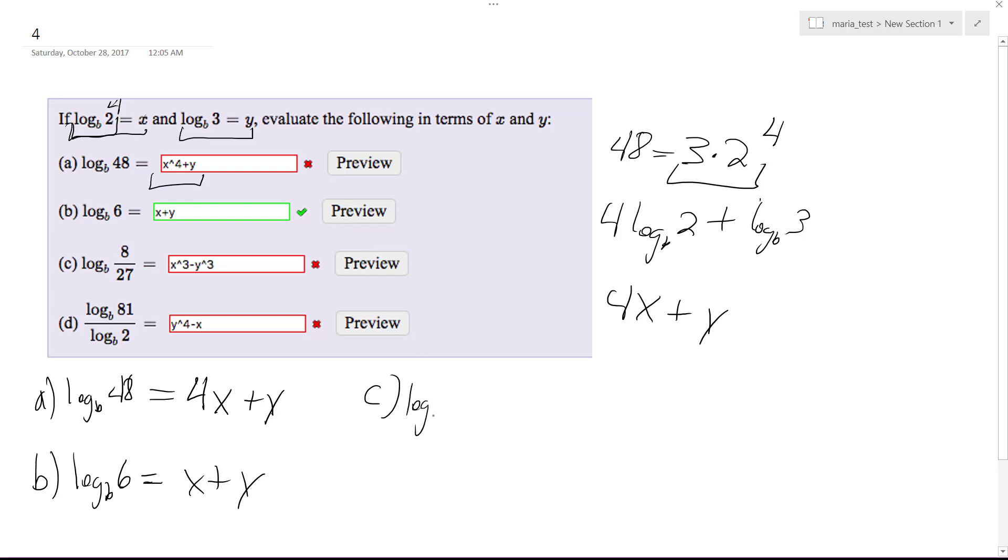C would be log base b of 8 divided by 27 would be equal to 3x minus 3y which is 2 cubed over 3 cubed when you factor that in.